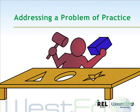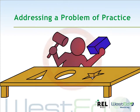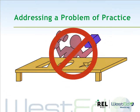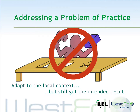Key to the success of a community of practice is systematically addressing a well-defined problem of practice. As you listen to this presentation, consider your problem of practice and how what John Paul shares about the specifics of academic conversations fits with your district's, school's, or classroom's needs. Don't try to push a square peg in a round hole — consider how you might adapt or vary the recommendations to align with your context and still get the desired result.